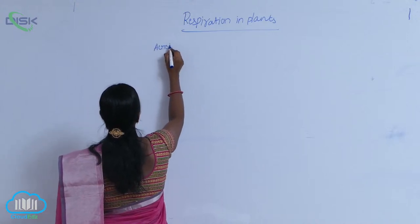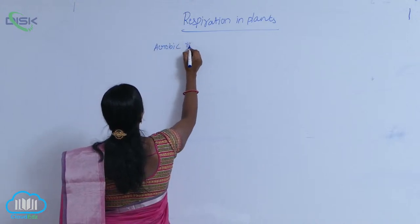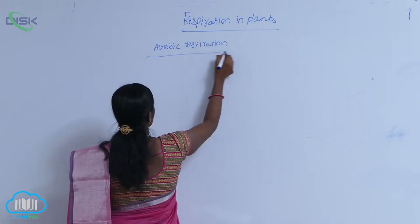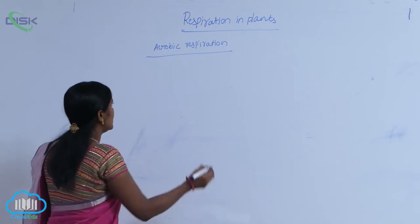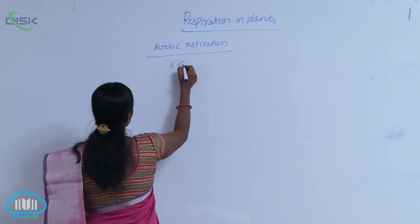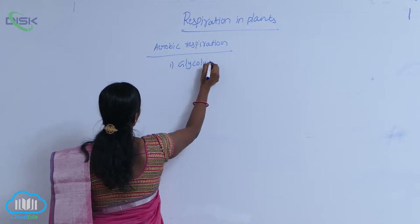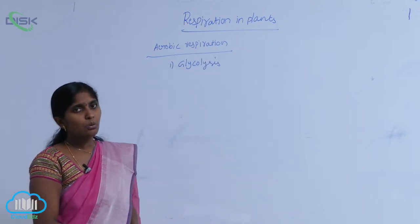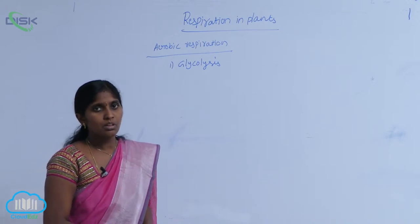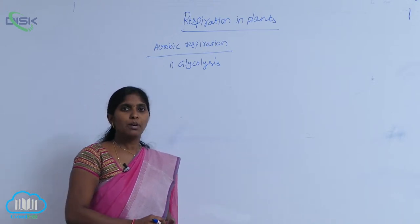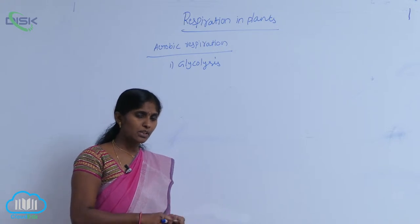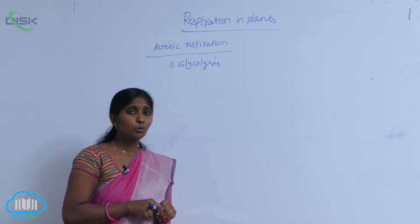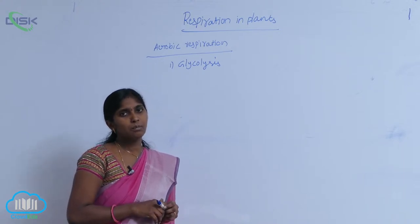Aerobic respiration includes four major steps. One is glycolysis. Glycolysis means breakdown of glucose into two pyruvic acid molecules — one glucose molecule is converted into two pyruvic acid molecules.